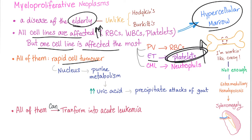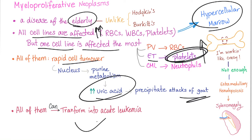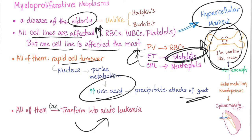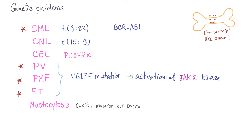Rapid cell turnover will lead to increased uric acid and gout attacks. These disorders can transform into acute leukemia and into each other, and they can lead to bone marrow fibrosis because the marrow is working excessively.